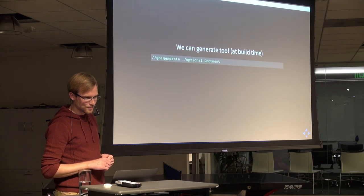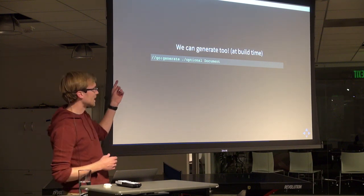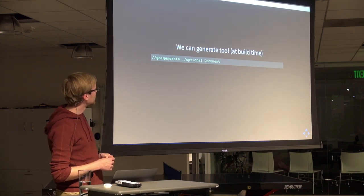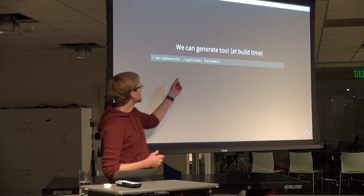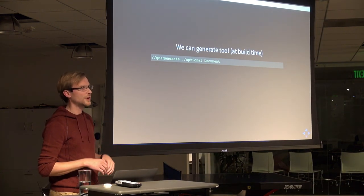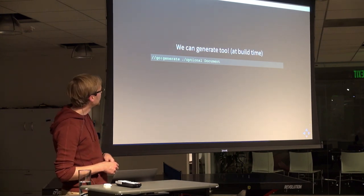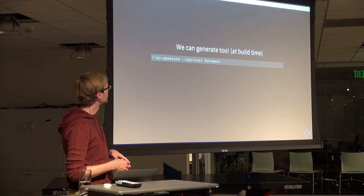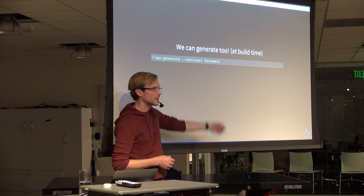It turns out that in Go, we can generate code too. This is Go Generate. This is a comment that you would put in your source code file. You basically just give it a command and whatever arguments — it's just running a command line tool. When you run go generate on your files, it'll search for these comments and execute the code it sees in there. So dot-slash optional is a program that I wrote that lives in the same directory as the rest of the source. The word document is just an argument to that command.